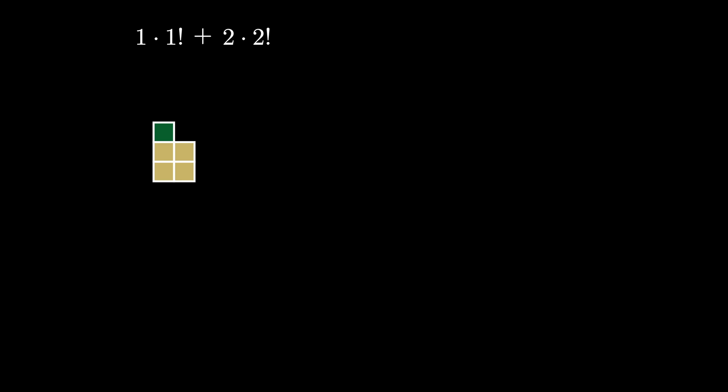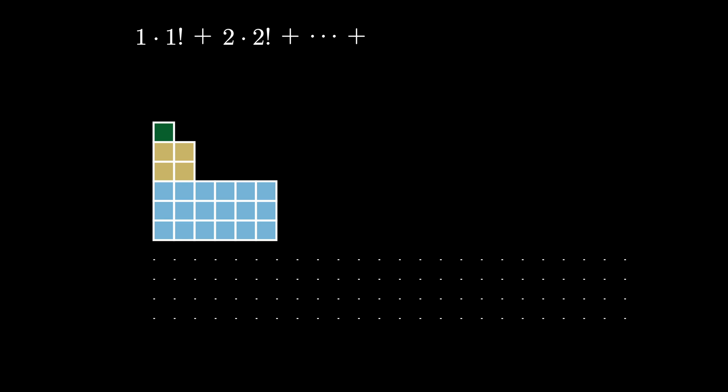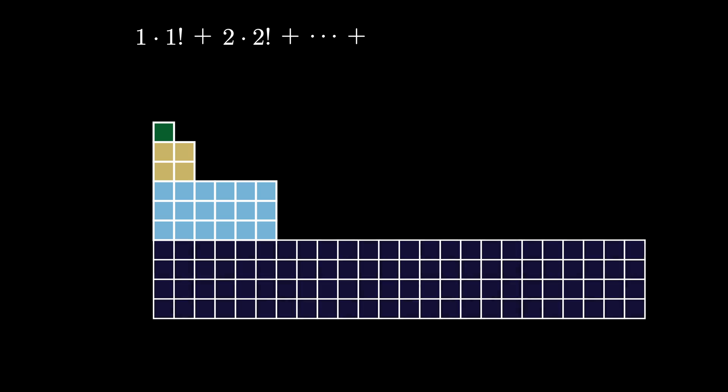Below that, place a grid of 3 by 6, or 3 by 3 factorial, squares representing the number 3 times 3 factorial, and continue the process of stacking i by i factorial grids of squares, stopping here at n by n factorial, representing the number n times n factorial. So a diagram like this represents the sum 1 times 1 factorial plus 2 times 2 factorial, and so on up to n times n factorial. Here we've only pictured up to n equals 4 because the grids get really wide after that.